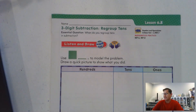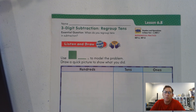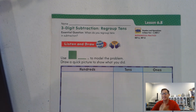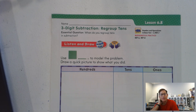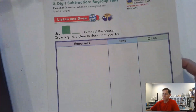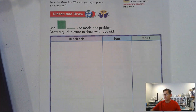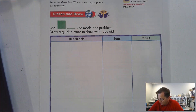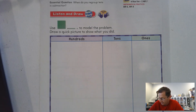Hello, everybody. In today's lesson, lesson 6.8, we're going to work on 3-digit subtraction with regrouping 10s without drawing the models. So we are going to review using models. Listen to the following problem, and then pause the video to draw your quick picture and find the difference.